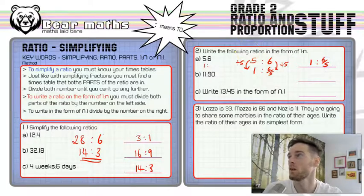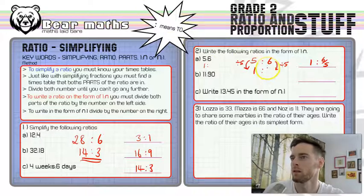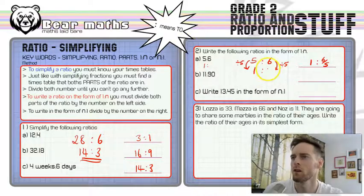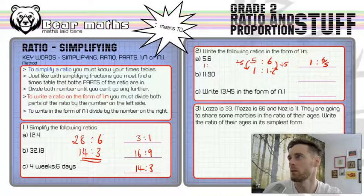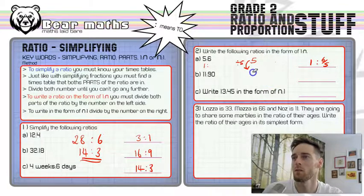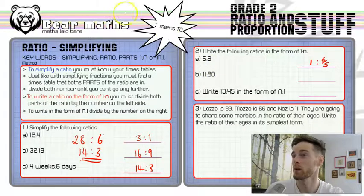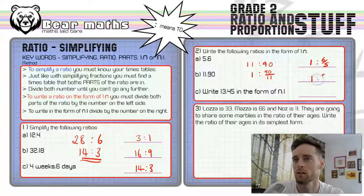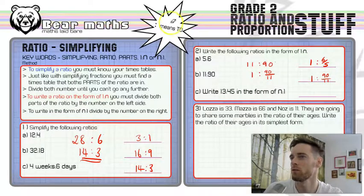You could convert that fraction to the mixed number one and one fifth, or since one fifth equals 0.2, you could write it as 1 to 1.2. But writing 1 to six-fifths is the easiest approach since you don't need to do extra working. For 11 to 90, we divide both by 11: 11 becomes 1 and 90 becomes 90 over 11. So the answer is 1 to ninety-elevenths. You could simplify that fraction further if you wanted, but you don't have to.